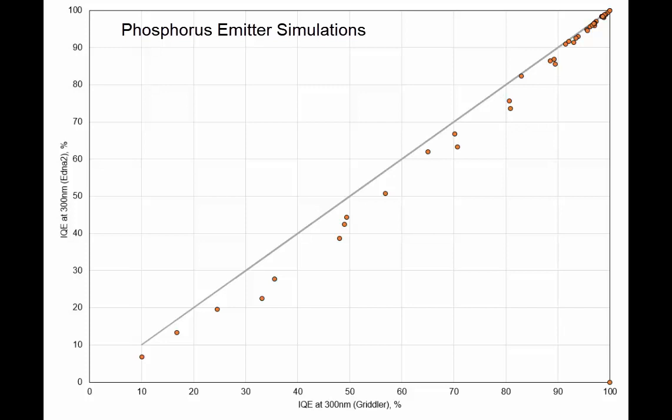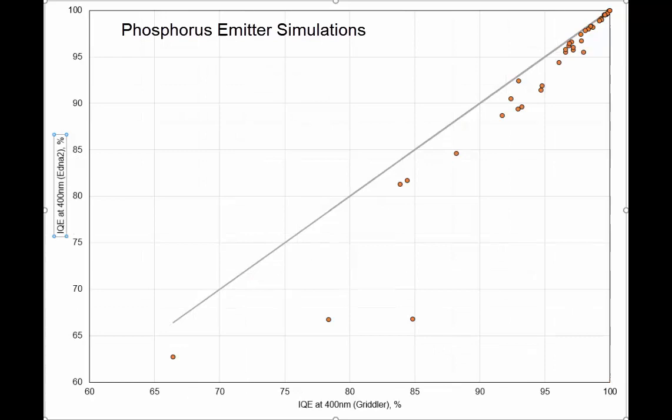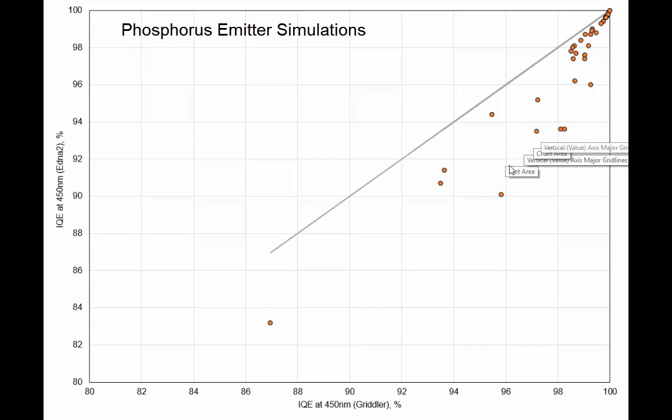For the IQE evaluated at 300 nanometers, both of course predict the same trend. There is general agreement, although larger deviations can be seen. And IQE at 350 is pretty much the same as IQE at 300. IQE at 400 nanometer, there is more deviation, and then IQE at 450, there is even larger deviation.